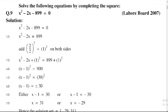The equation is x² - 2x - 899 = 0. So dear students, in case of the completing the square method, first of all we check the coefficients.